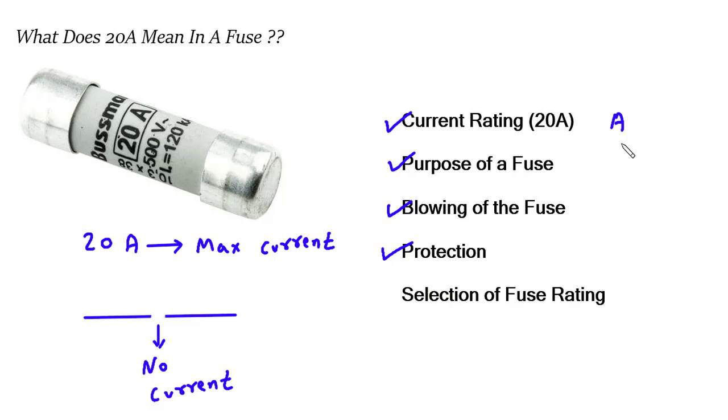Selection of fuse rating. The fuse rating is chosen based on the maximum current that the circuit is expected to draw under normal operating conditions. It should be rated slightly higher than the normal operating current to allow for brief surges in current without blowing unnecessarily. However, it should also be low enough to provide adequate protection against overcurrent situations.